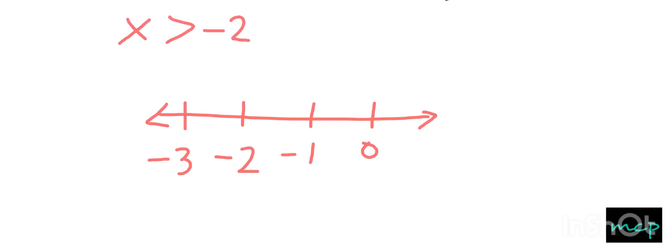So if it's not included, we have to make an open circle for the negative 2. And because it says greater than, so we'll move to the positive infinity.